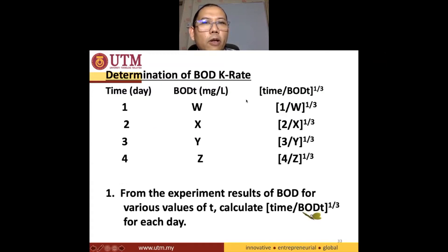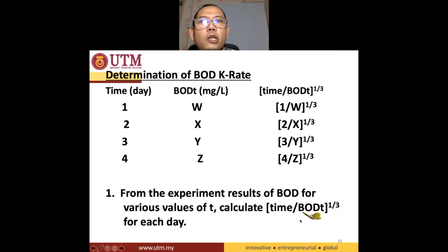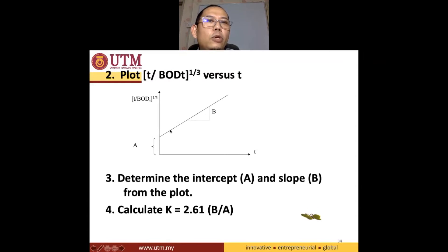You need to find out BOD1, BOD2, BOD3, BOD4 at least to get data, so that after you got all this BOD data for day 1, day 2, day 3, day 4, you will be able to get these values. Then you will plot these values against time, and hopefully you will get a straight line and obtain your gradient and also the intercepts.